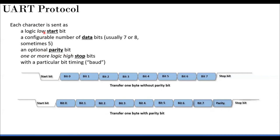So the protocol is: logic-low start bit to pull the data line low, followed by a configurable number of data bits — seven bits with a parity bit, eight bits without, or even five bits in which case you have more stop bits. Then a stop bit to return the line to high. You might have heard of baud rate — it is the rate at which bits are transmitted. In UART, since one bit is one signal, baud rate equals bit rate.